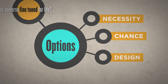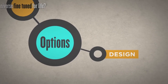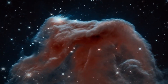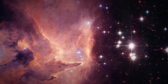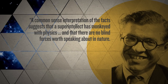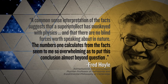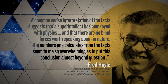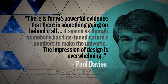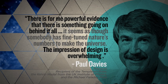Given the implausibility of physical necessity or chance, the best explanation for why the universe is fine-tuned for life may very well be that it was designed that way. A common-sense interpretation of the facts suggests that a super-intellect monkeyed with physics and that there are no blind forces worth speaking about in nature. The numbers one calculates from the facts seem so overwhelming as to put this conclusion almost beyond question. There is powerful evidence that there is something going on behind it all — it seems as though somebody has fine-tuned nature's numbers to make the universe. The impression of design is overwhelming.